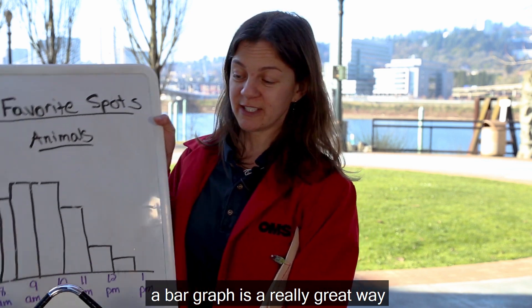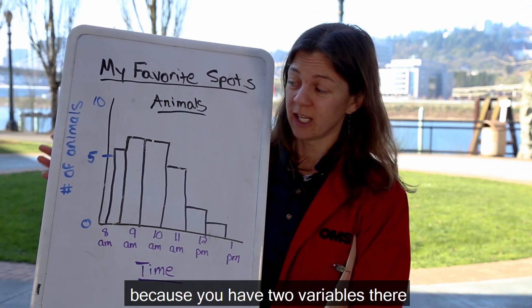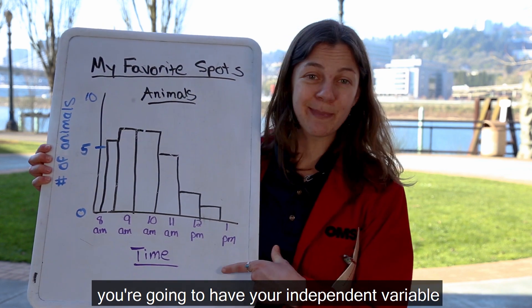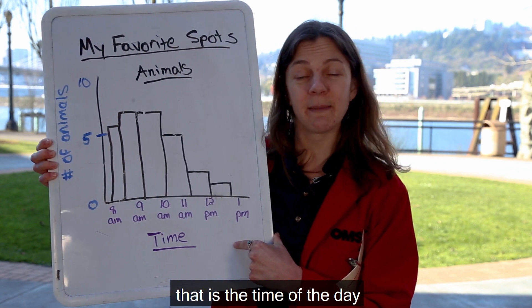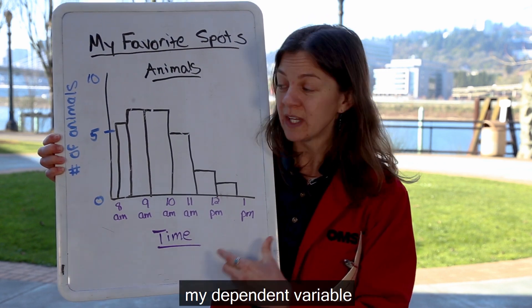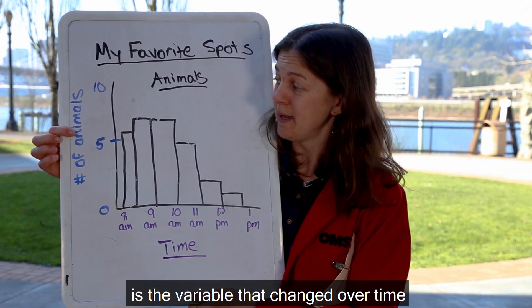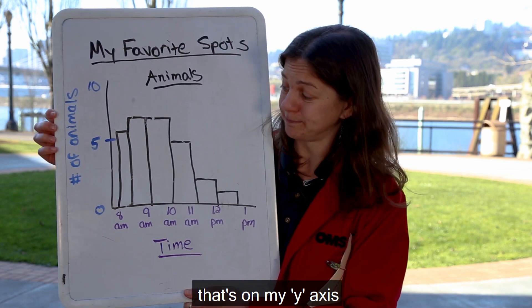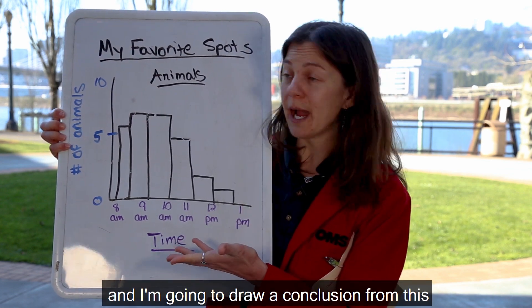A bar graph is a really great way to look at data over time because you have two variables. Your independent variable goes along the bottom on your x-axis — that is the time of day I made my observations. My dependent variable is the variable that changed over time, which is the number of animals I saw, and that goes on my y-axis. So I graphed out my data and I'm going to draw a conclusion from this.